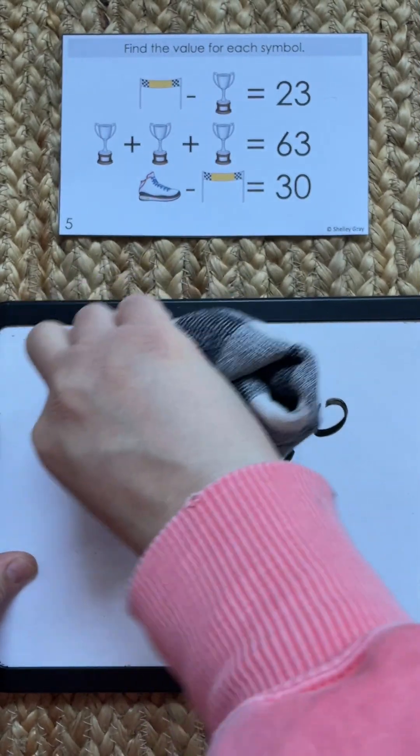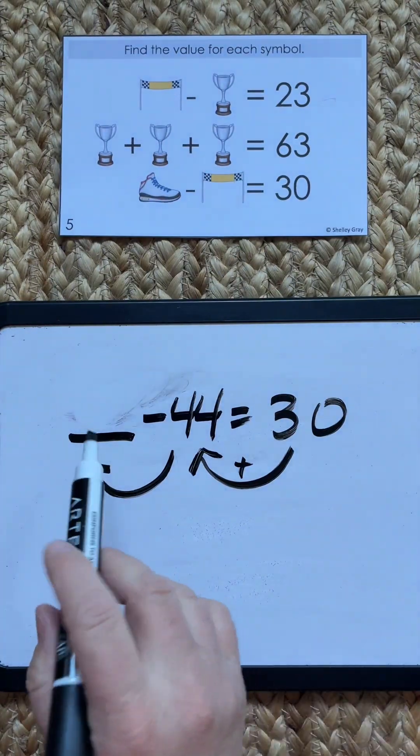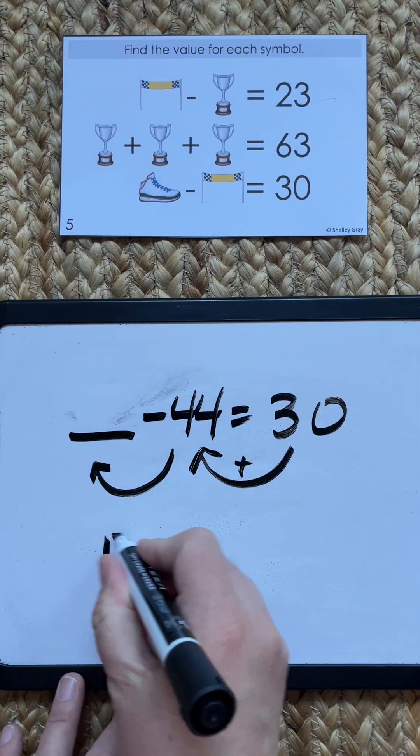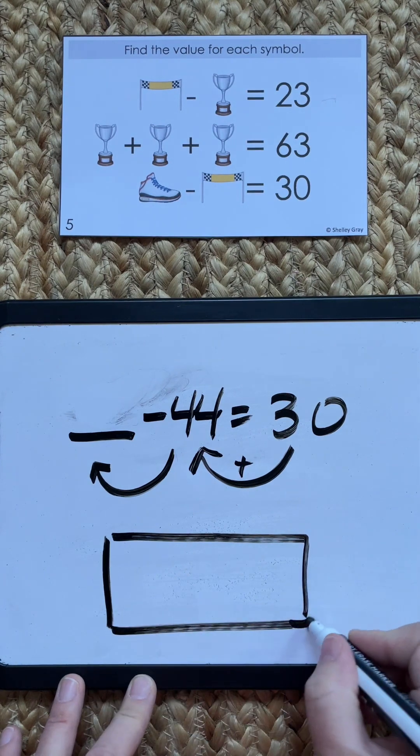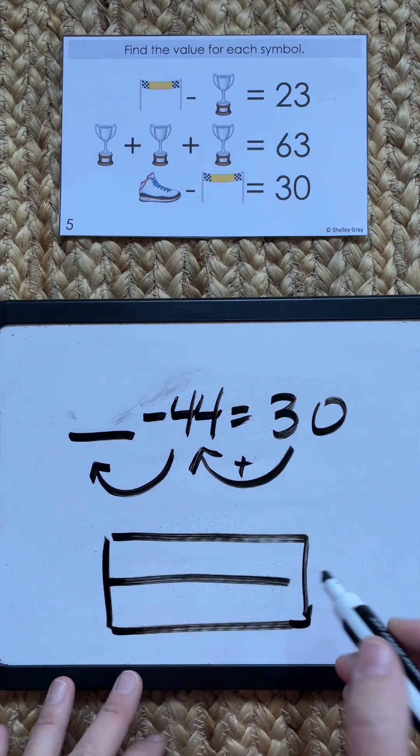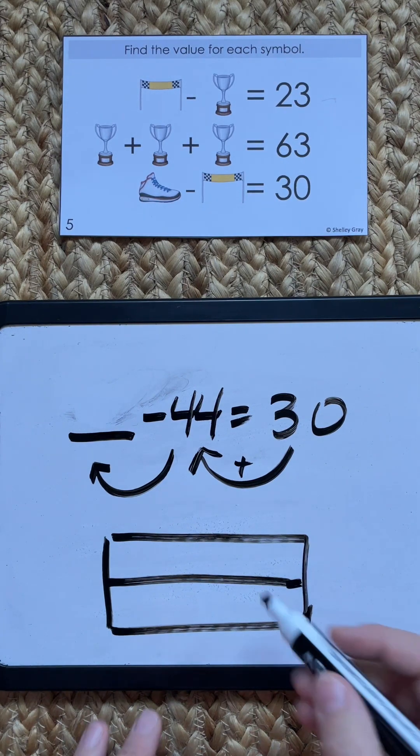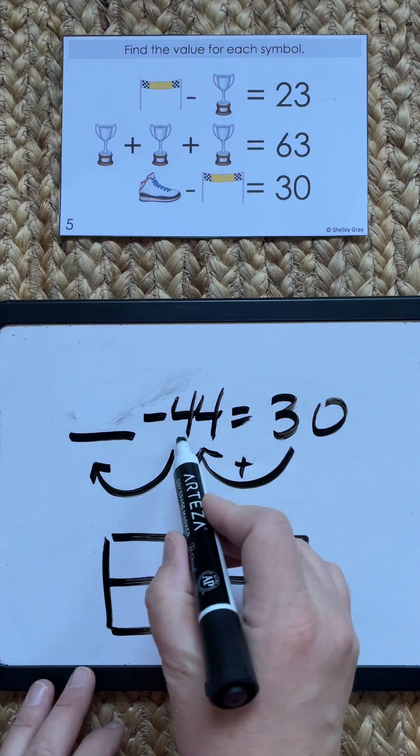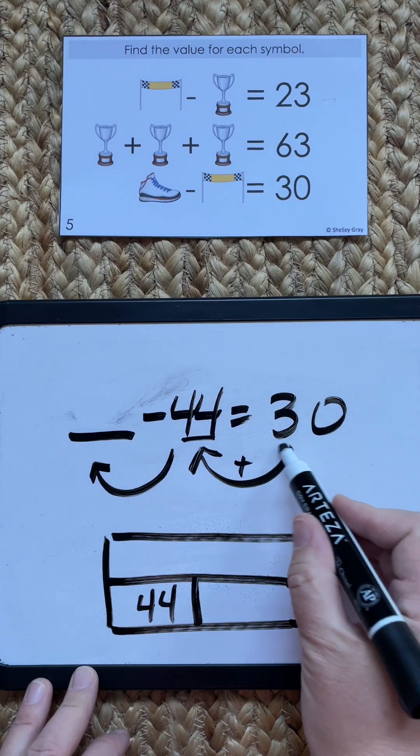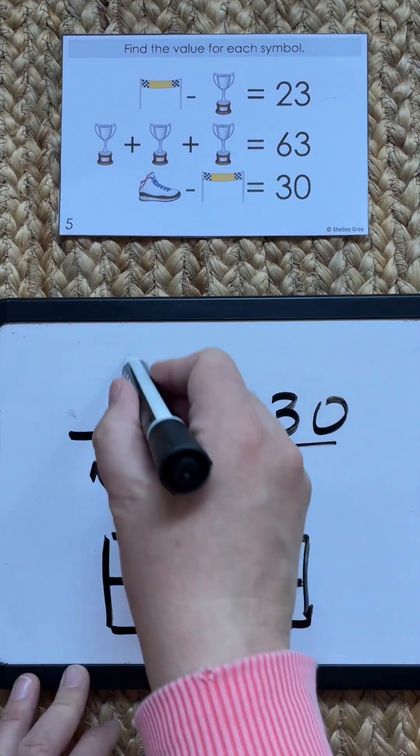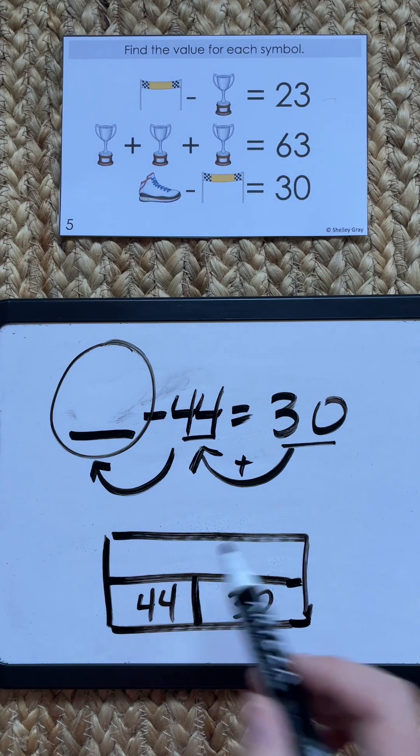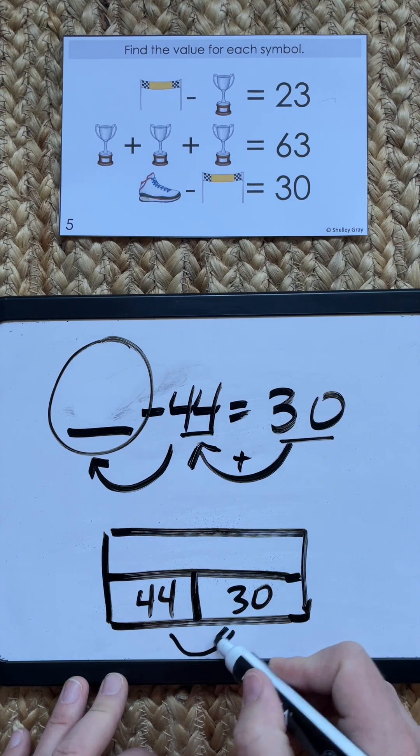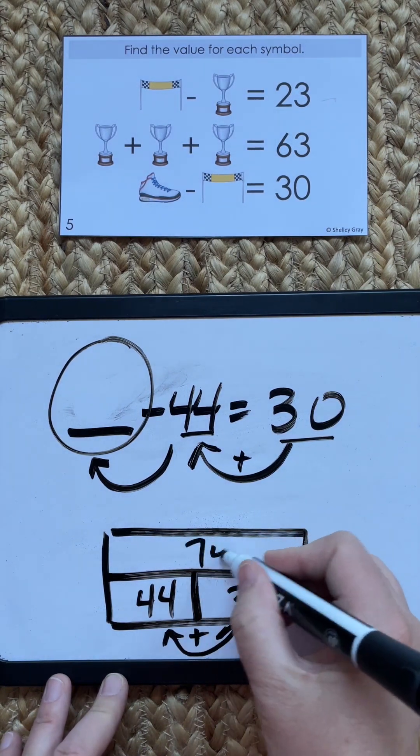So for other students, I can almost guarantee you, you will have a couple that are going to say that this is 14 because they're a little mixed up with the order of the numbers. If you have kids that are making that error or who have that misconception, the part-part-whole is a great way to fix that. So again, what do we know? We know the part that we took away was 44, we know the part that we have left is 30, we do not know the whole thing. We don't know this number. So now it becomes clear that this is not 14, this is the sum of 44 and 30. So this is 74.